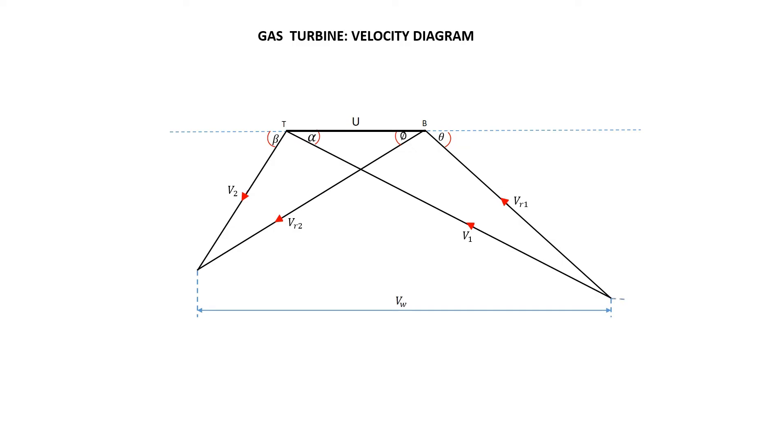On the blade side, which is on the right, you can now measure the final velocity Vf1, which is vertical to the plane. On the left, the turbine side, you can measure the final velocity Vf2. Also ensure it is vertical to the plane.